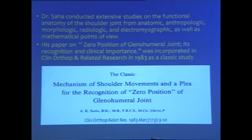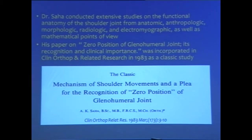Dr. Saha conducted extensive studies on the functional anatomy of the shoulder joint from anatomic, anthropologic, morphologic, radiologic, and electromyographic, as well as mathematical points of view. His paper on zero position of the glenohumeral joint — its recognition and clinical importance — was incorporated in Clinical Orthopedics and Related Research in 1983 as a classic study.